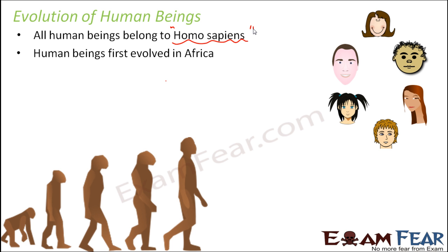Human beings, the great apes of Africa, and gorillas all share a common ancestor. That might sound surprising, but there are so many things in common between human beings, gorillas, and apes that yes, they share a common ancestor and are more closely related to each other than to any other organism.